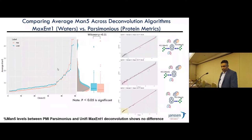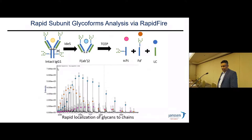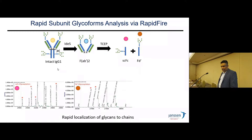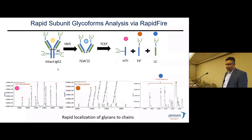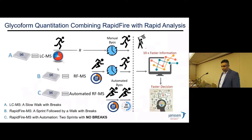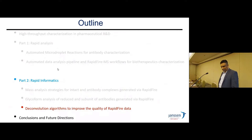For subunit analysis, IdeS digestion in solution produces the Fab prime 2, then a reducing agent creates fragments. Deconvoluting the data reveals the single chain Fc, the Fd, and when examining the single chain Fc closely, we see additional glycosylation — glycosylation observed in all three chains using RapidFire data. This illustrates that we perform not only high throughput analysis but also high throughput informatics. LC takes eight hours; RapidFire MS shortens the analysis time, and combined with automation the entire workflow completes in less than one hour.